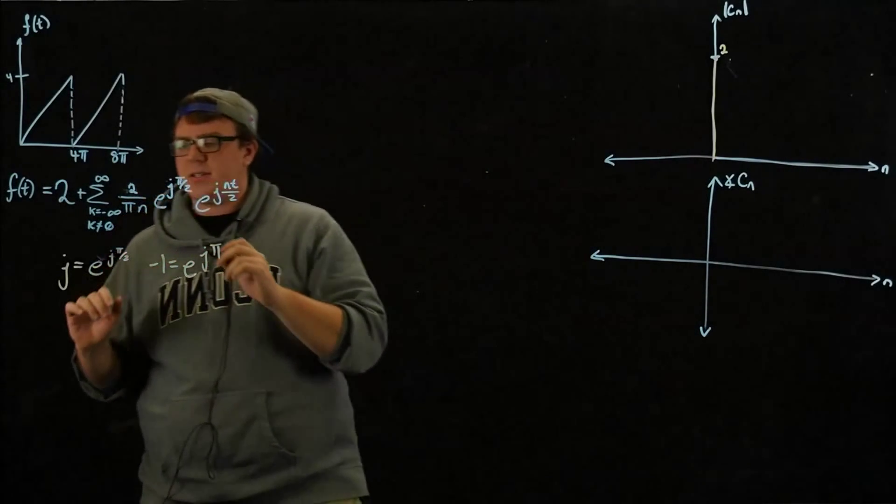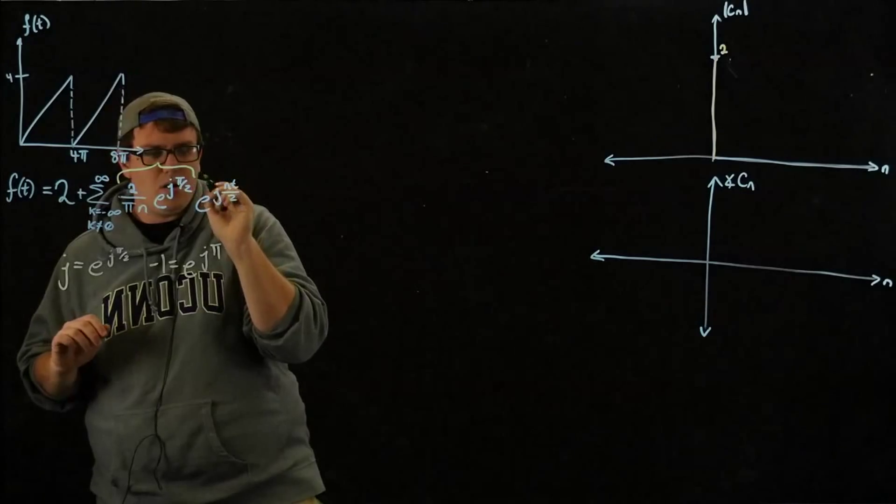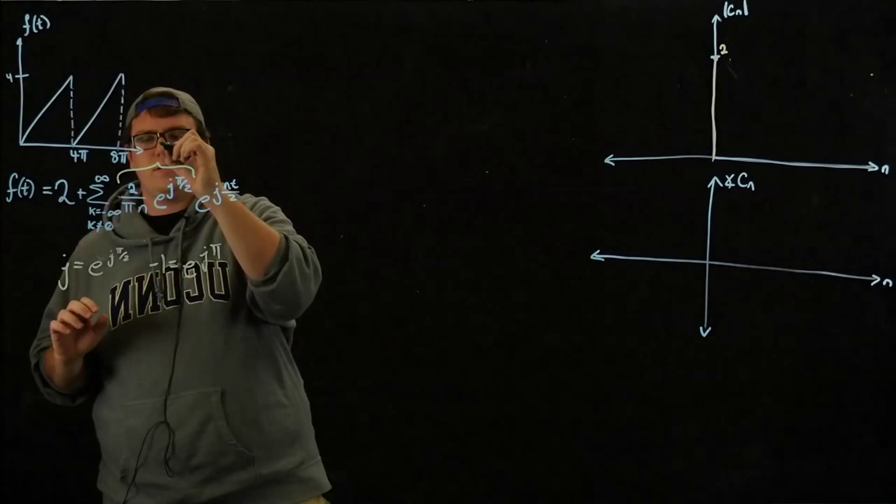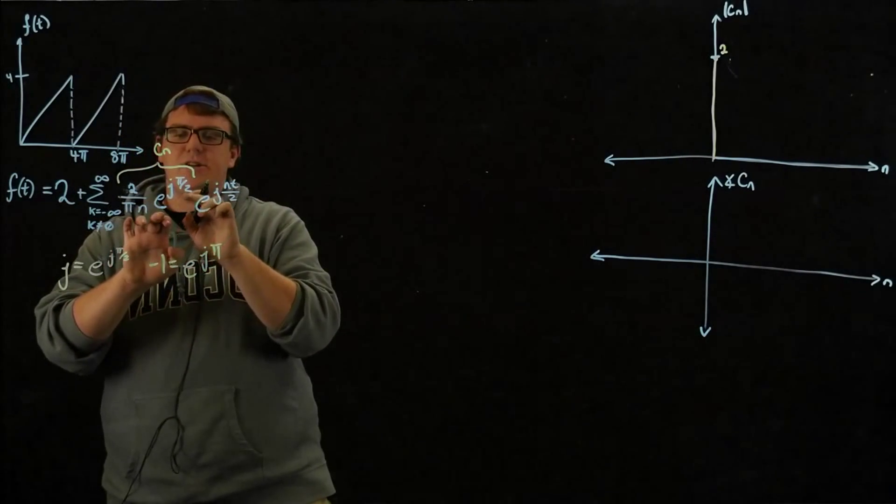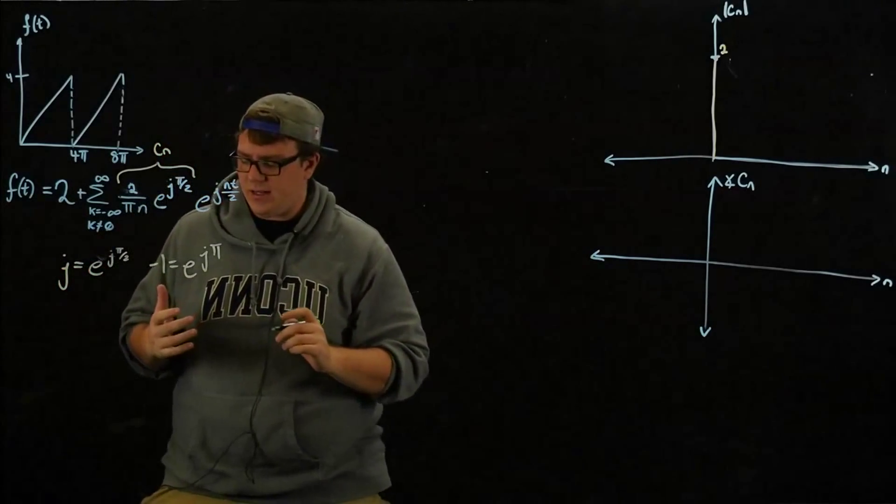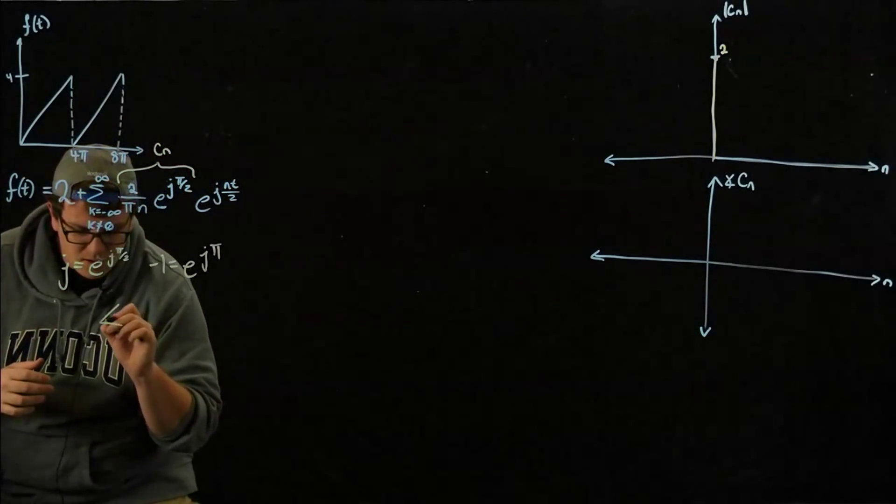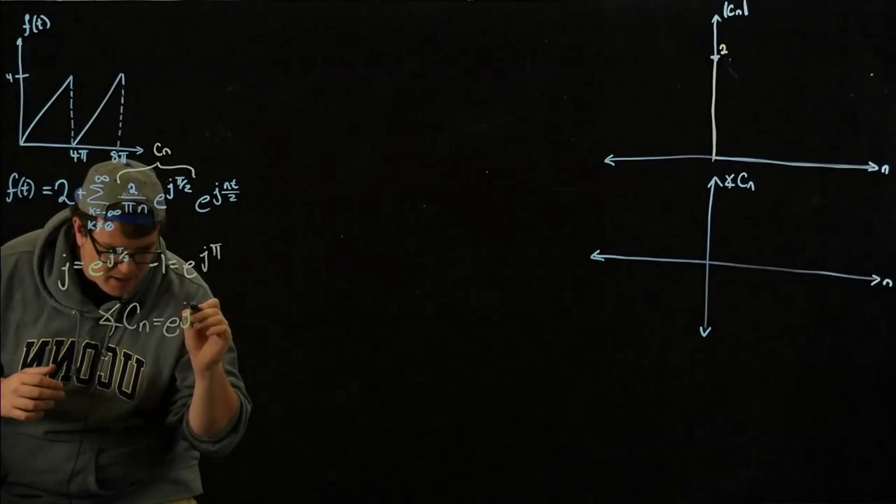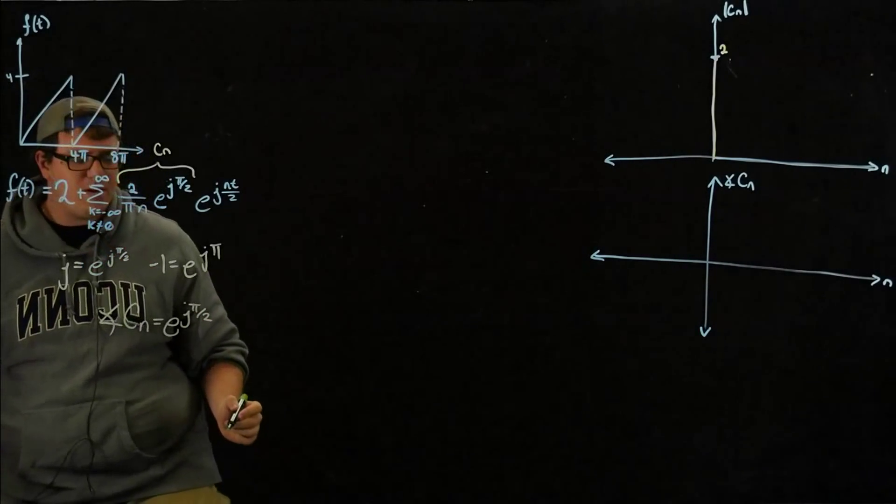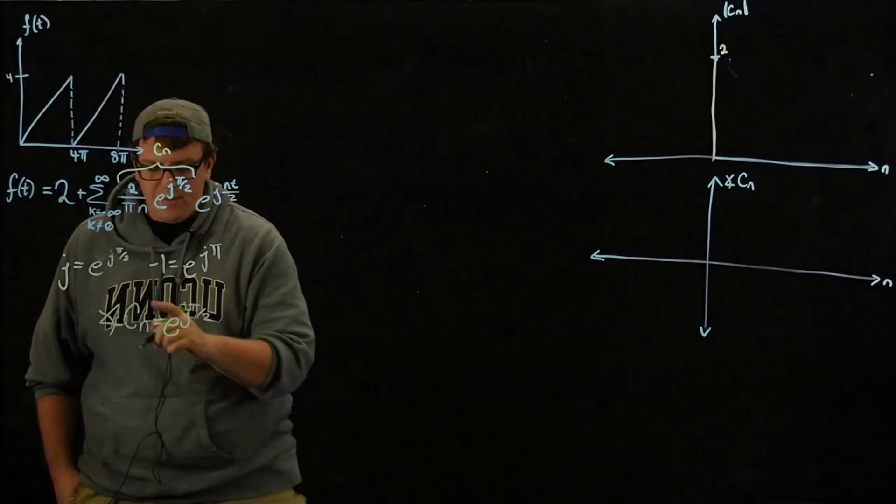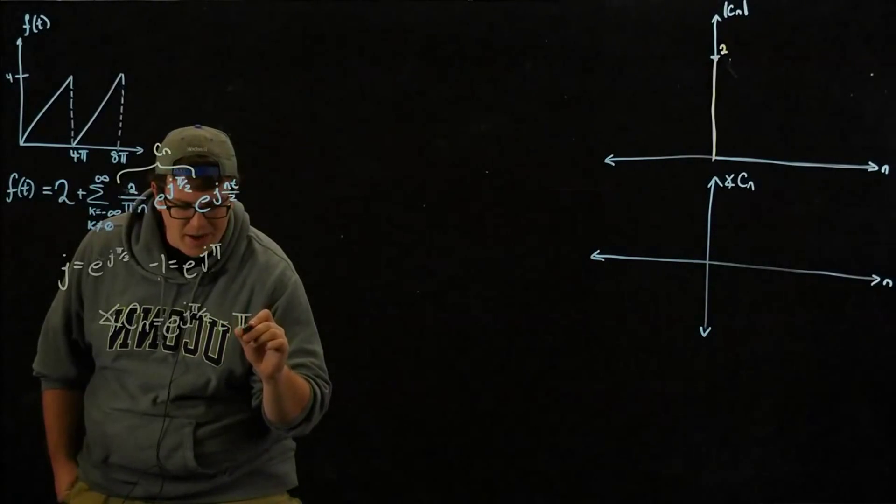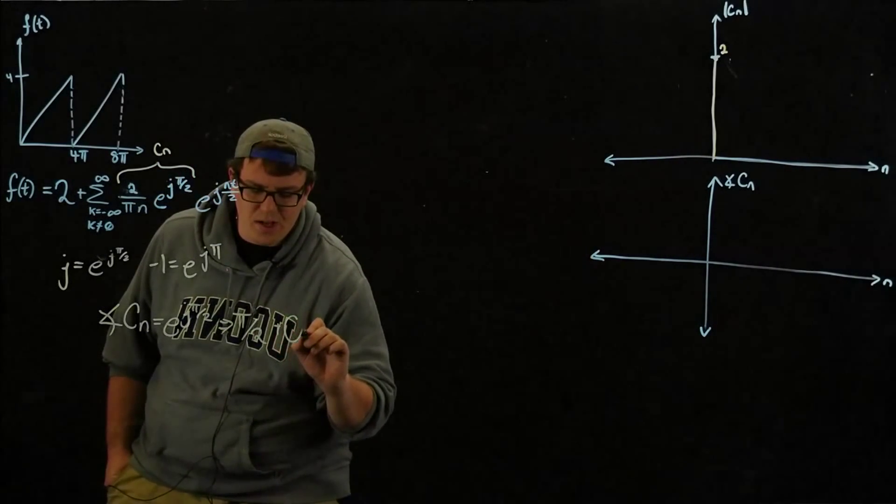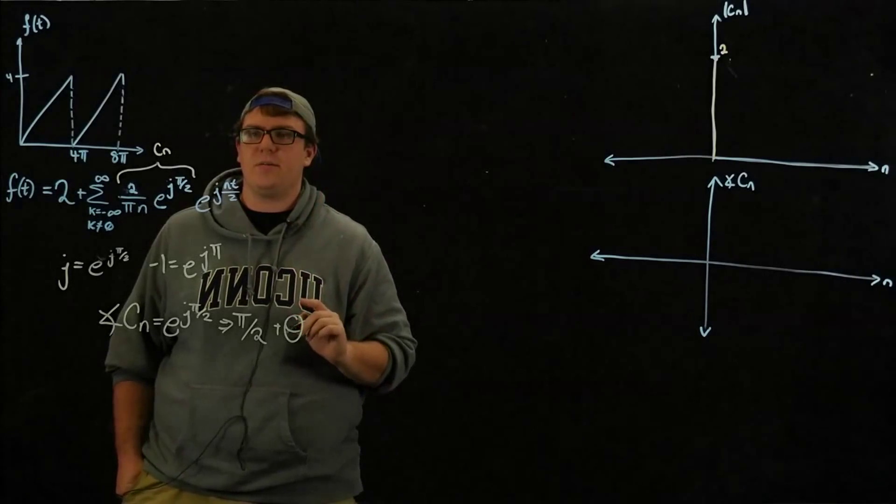Now, we know that this is our CN term here, because this is our e to the j omega 0 t. So these are our CNs. So the e to the j value here is only for our phase. So the phase angle of CN is equal to e to the j pi over 2. So that means that the angle is actually just equal to pi over 2.